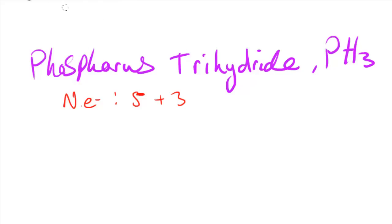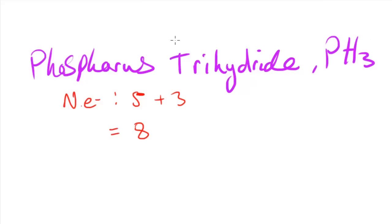Now that we know the number of electrons around the phosphorus in phosphorus trihydride is 5 plus 3, which equals 8, what we need to do is find out the number of electron pairs. The way we do this is simply by dividing 8 by 2, so 8 divided by 2 equals 4. Therefore there are going to be 4 electron pairs.